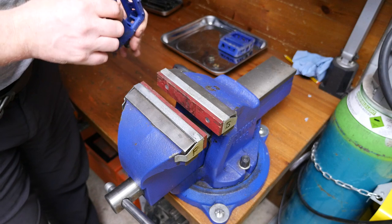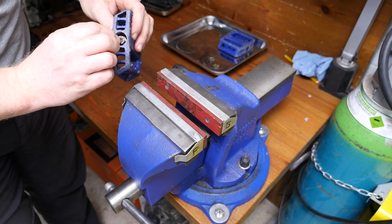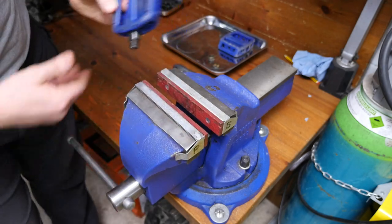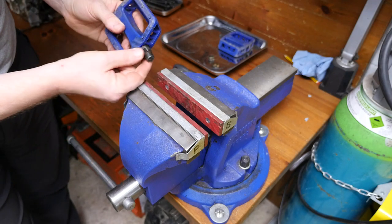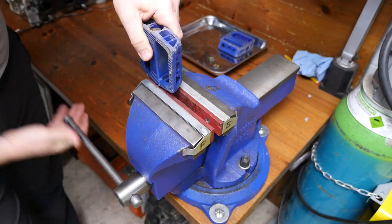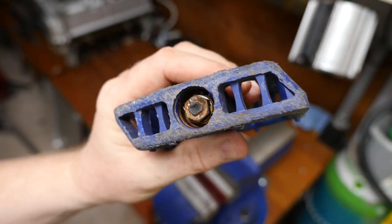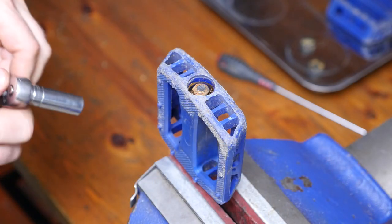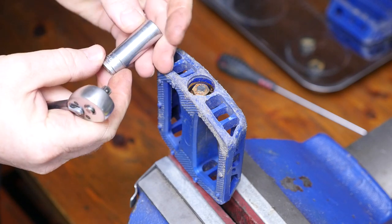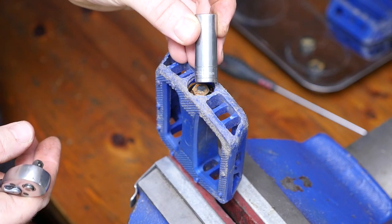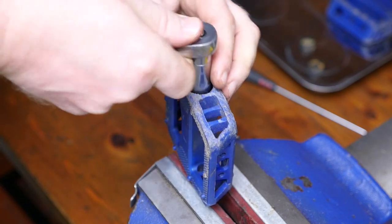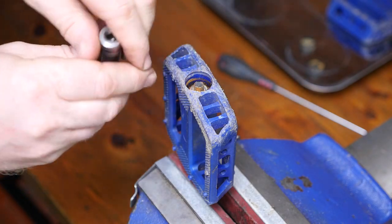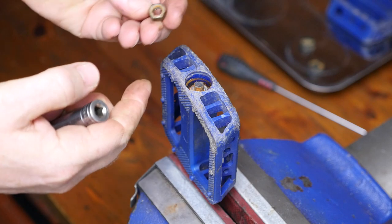Right so now we need to undo the lock nut. So we put the flat of the axle into the vice, that area there which is the two flats, and that will hold the pedal sturdy. This pedal is looking quite terrible inside, definitely in need of a service. So these pedals require a 12mm socket to undo the lock nut. So I'll speed this part up. And out comes the lock nut, a rusty one.